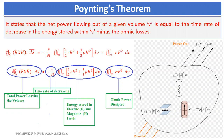The Poynting theorem states that the net power flowing out of a given volume V is equal to the time rate of decrease in the energy stored within the volume V minus the Ohmic losses. By looking at this picture, we have a volume and power is going in and power is going out from this port. The total power going out of the volume is equal to the time rate of decrease in the energy stored in the electric field and the magnetic energy stored in the magnetic field minus the Ohmic losses, which are also treated as the Ohmic power dissipated.